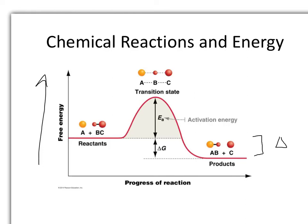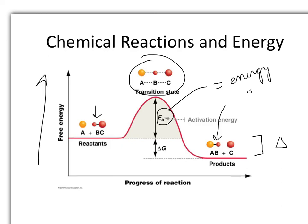In order for reactants to be converted to products, they need to go through a transition state — a temporary, very unstable state. To achieve the transition state, there is an energy barrier called the activation energy, or EA (energy of activation). This is what must be overcome to break the existing bond and allow the new bond to form.